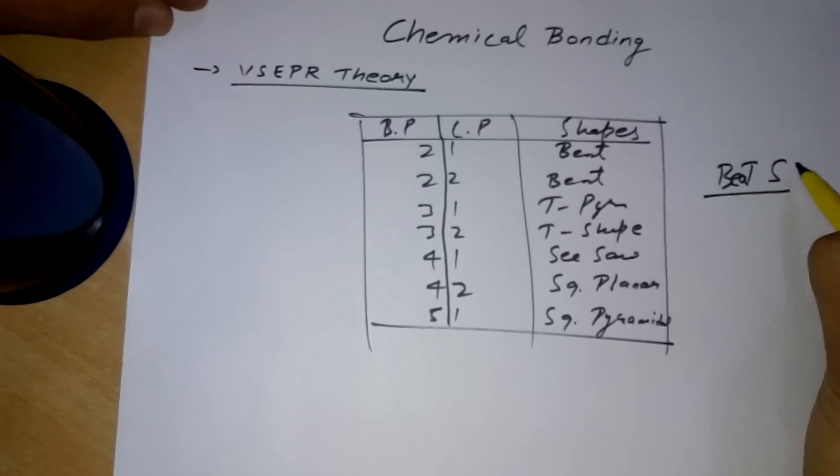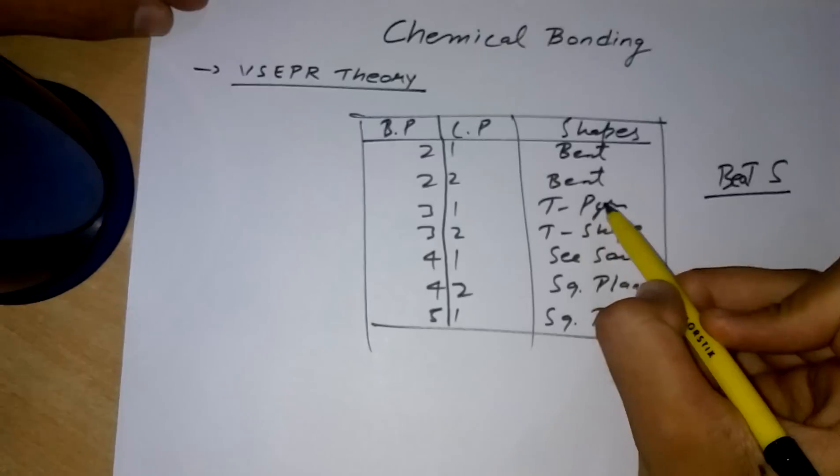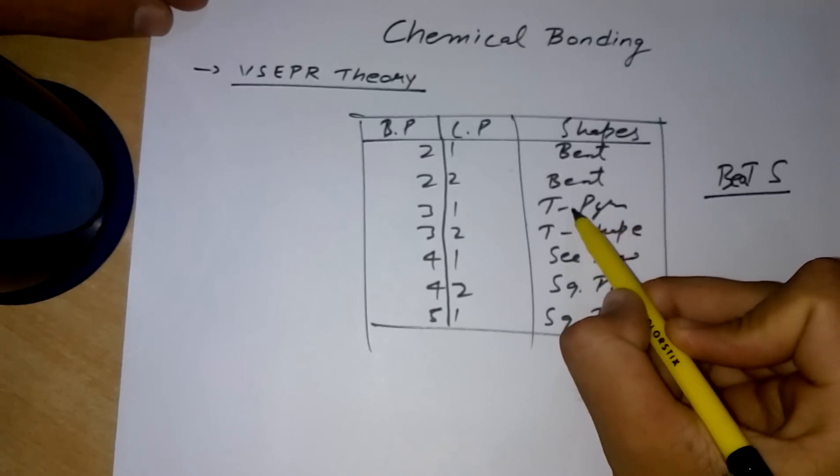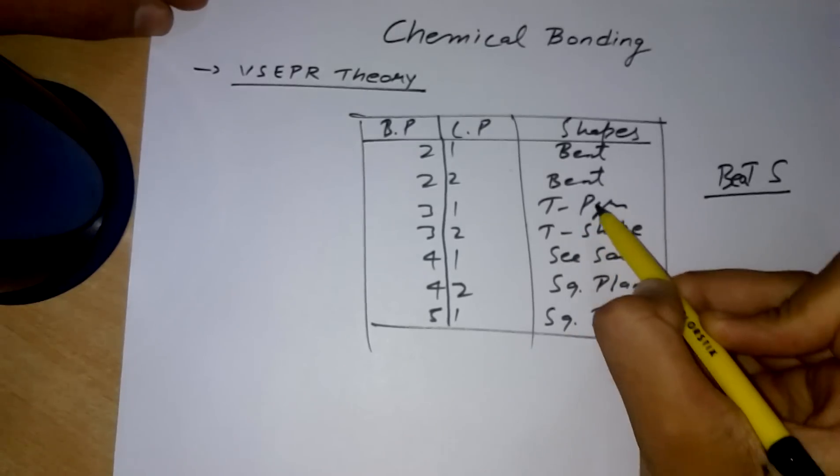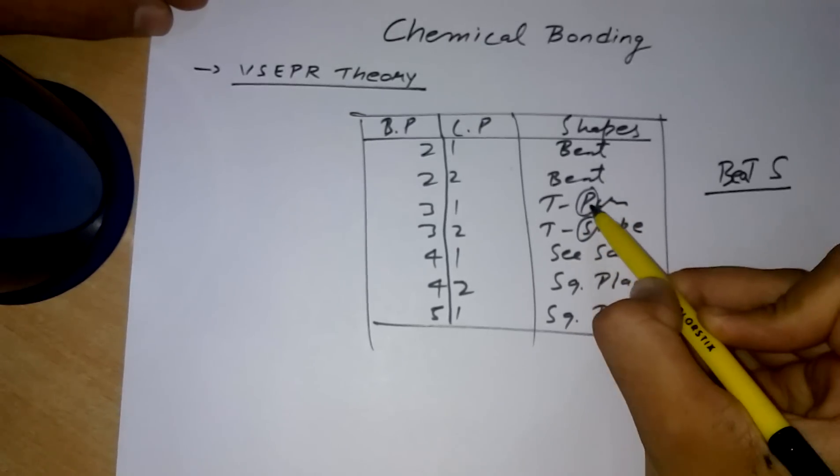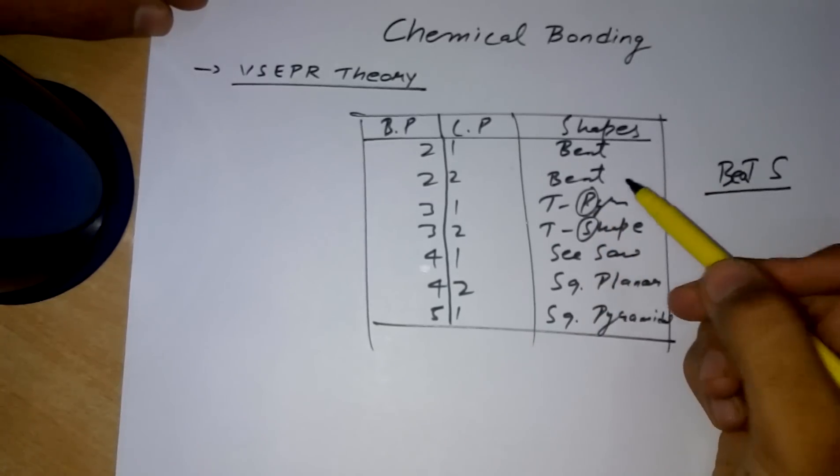Now see, for remembering which one comes before in T-pyramidal and T-shape, go alphabetically. Here we have P and here is S, which comes before P. And in these three, you can learn it like 'at 41 street she saw me.'